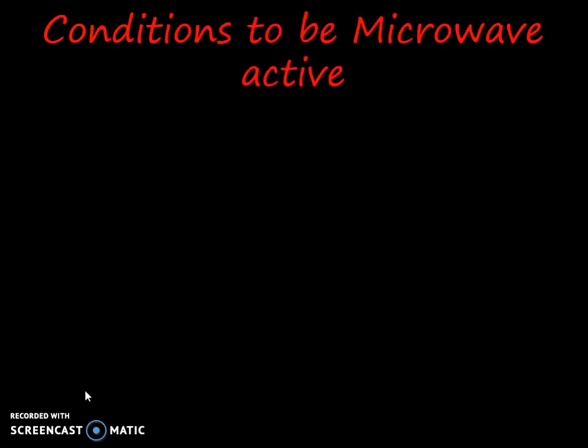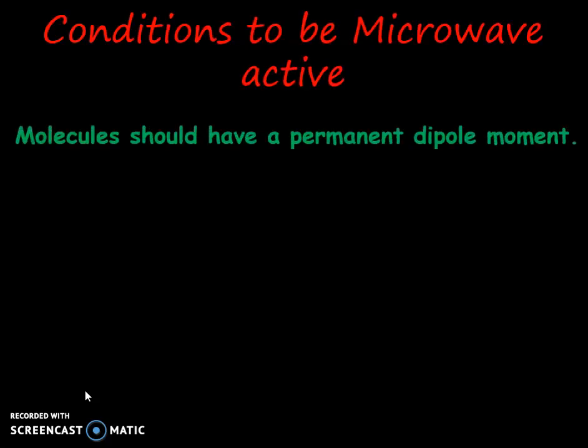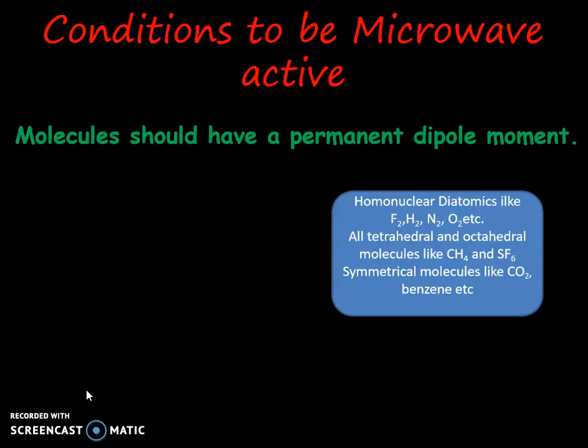Rotational spectra is shown by molecules which possess a permanent dipole moment. Hence, homonuclear diatomics like fluorine, hydrogen, nitrogen, etc., which do not have dipole moment, that is the dipole moment is zero.